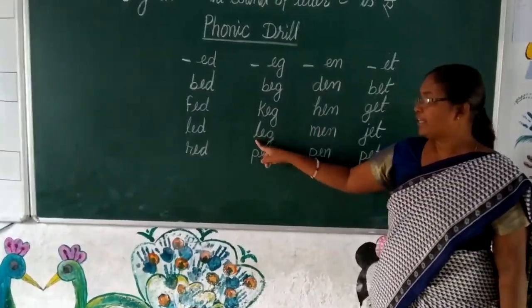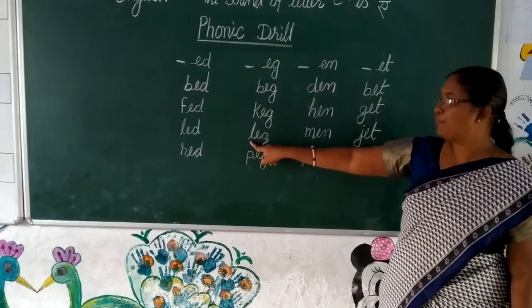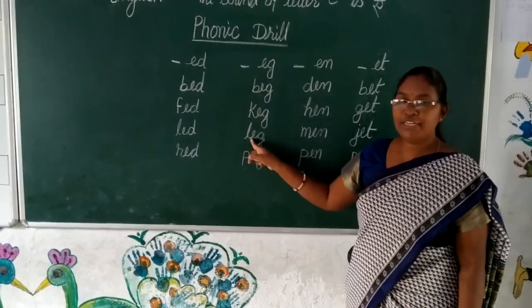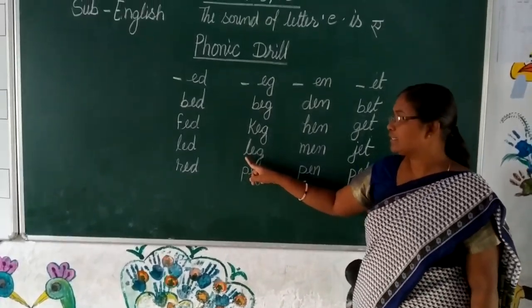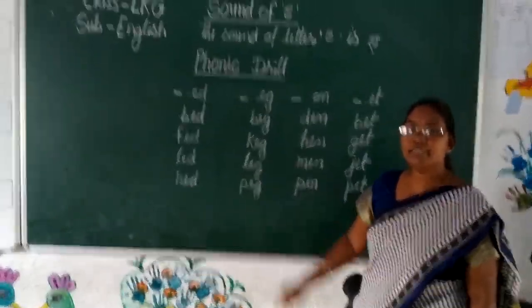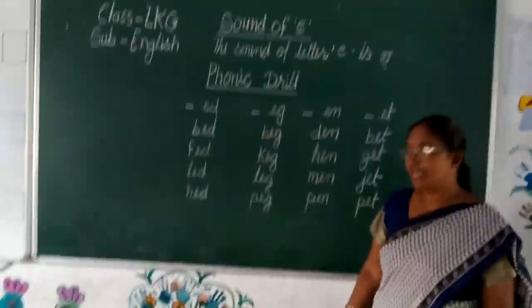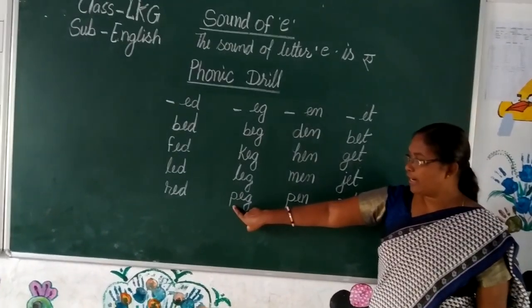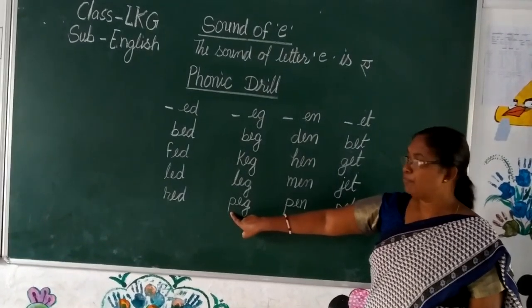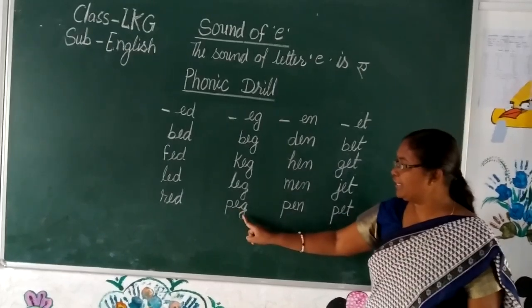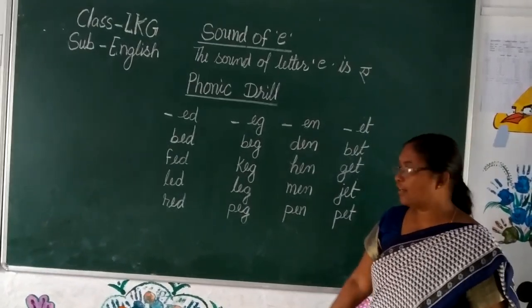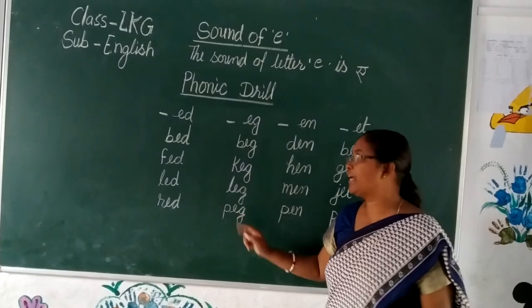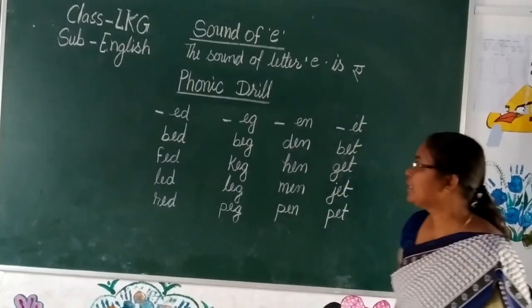Next we added letter P before E. The phonic sound is 'p-eg'.